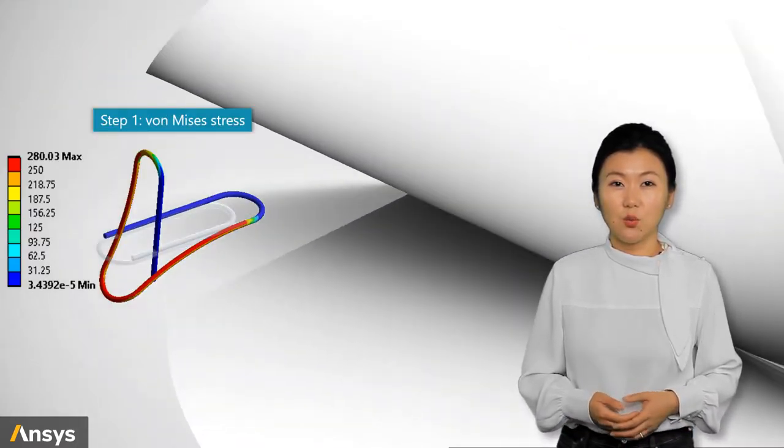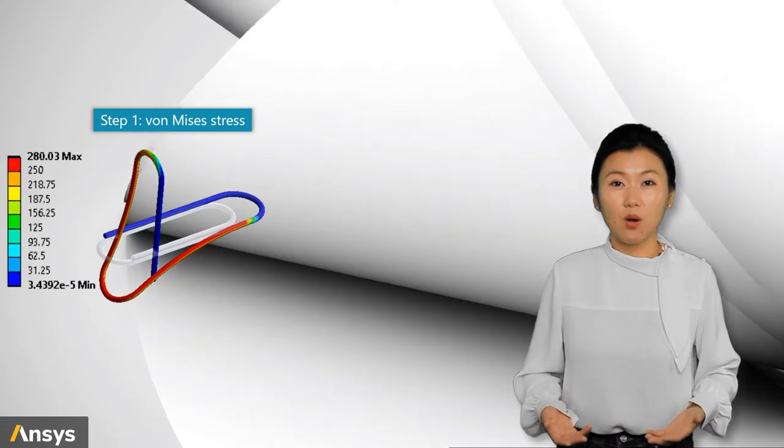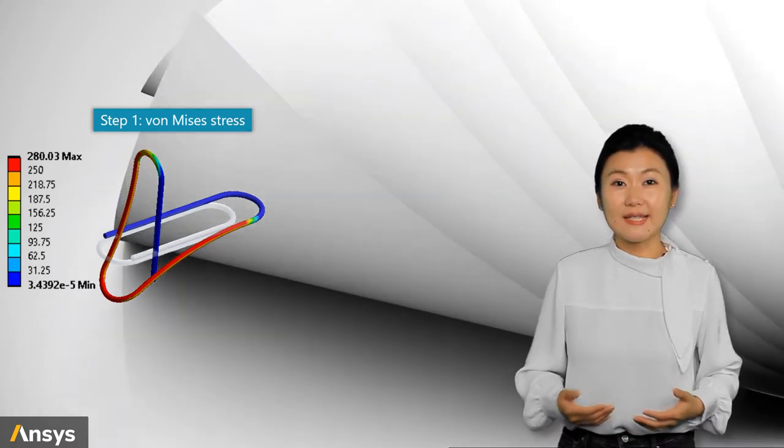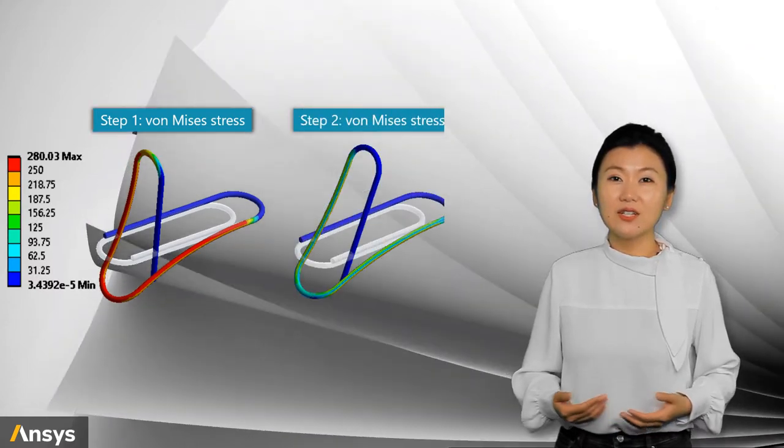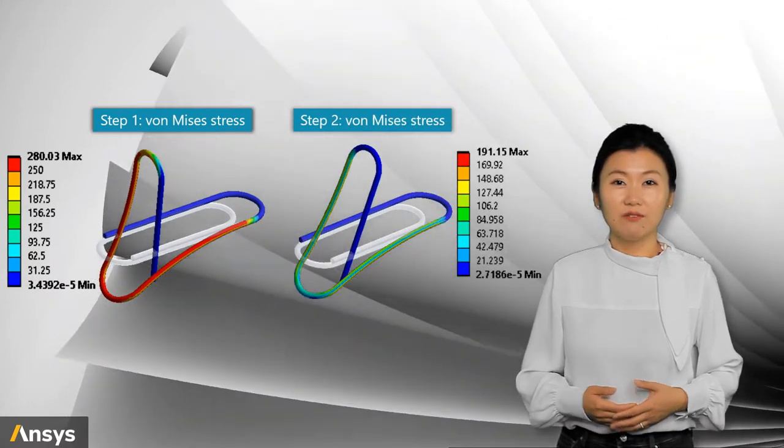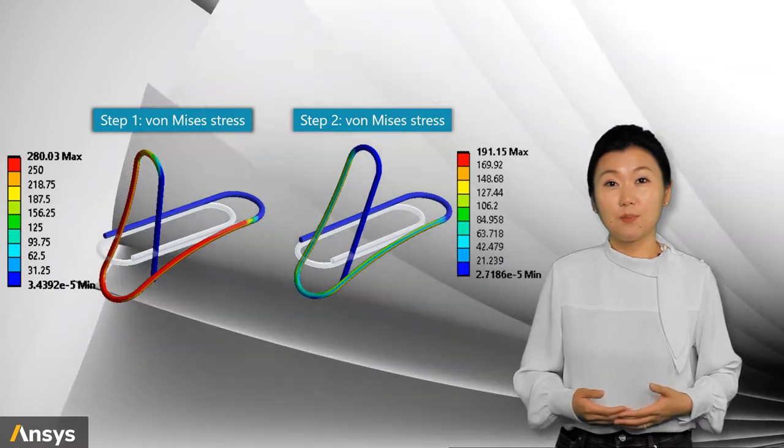The rest of the deformation in the paper clip is caused by the plasticity of the steel material and it is unrecoverable. For Von Mises stress, we can see that at the end of step 1, for most part of the paper clip, the value exceeds the yield stress 250 MPa. After the displacement control is removed, Von Mises stress is decreased to below the yield stress.